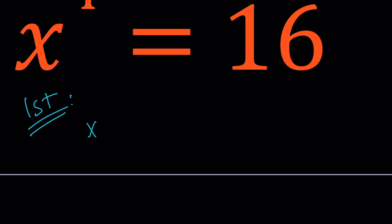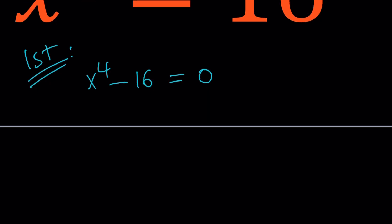So for my first method, I'm going to go ahead and subtract 16 from both sides, and then factor the resulting expression. x to the fourth minus 16 can be written in a couple different ways, one of which is difference of two squares. So I can write this as x squared plus 4 multiply by x squared minus 4 equals 0.